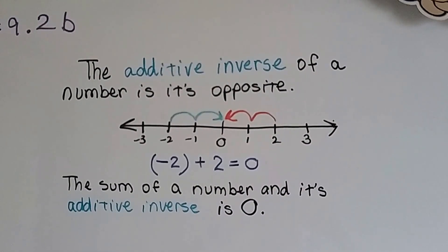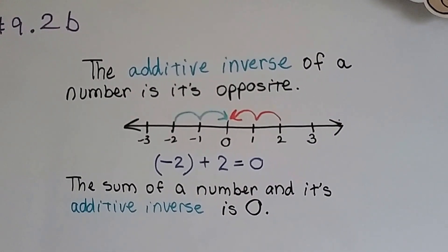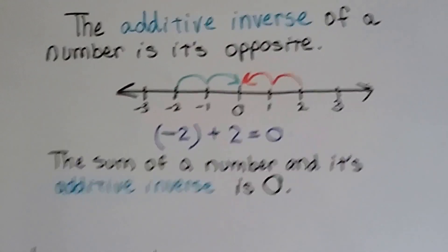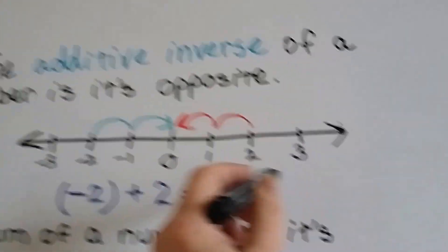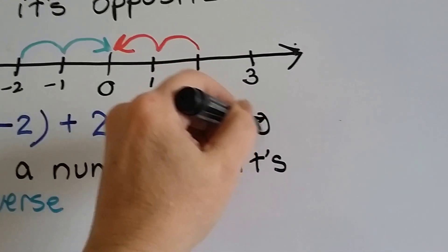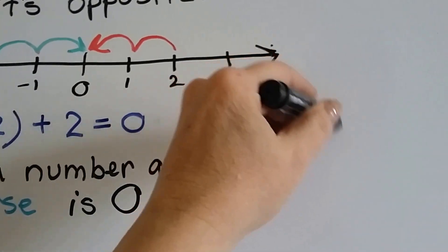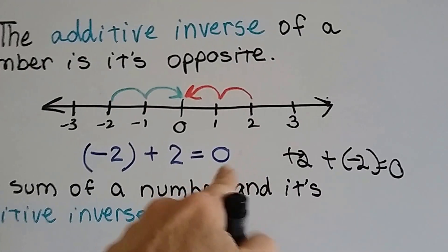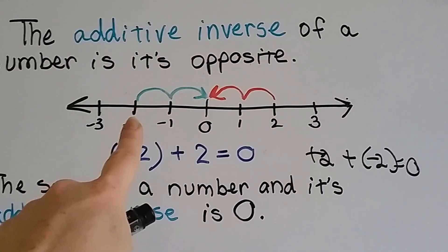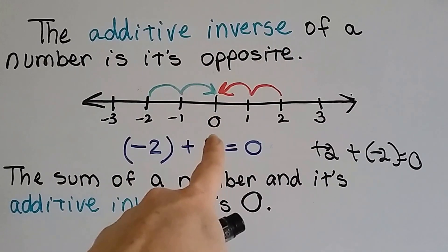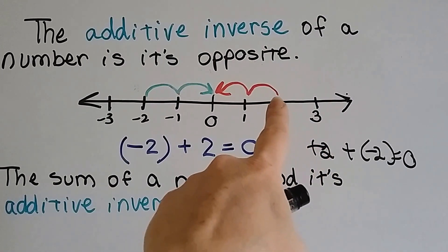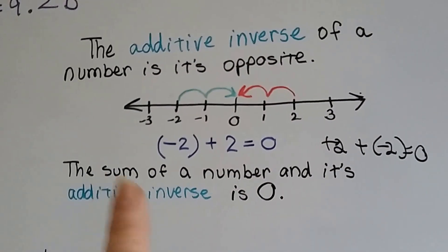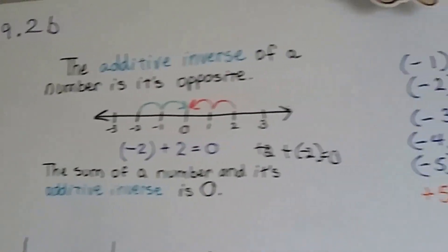As we talked about in 9.2, the additive inverse of a number is its opposite. When we add a negative 2 to a positive 2, it gets us to zero. If we have a positive 2 and we add a negative 2, that's going to get us to zero. The sum of a number and its additive inverse is zero.